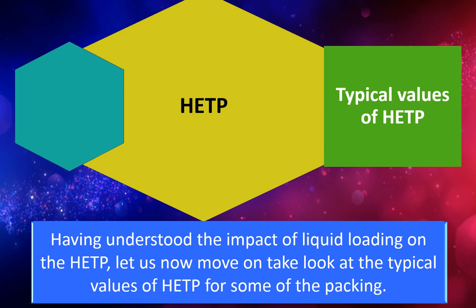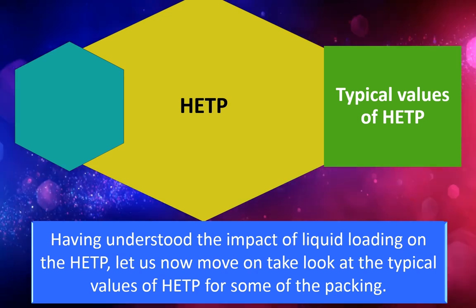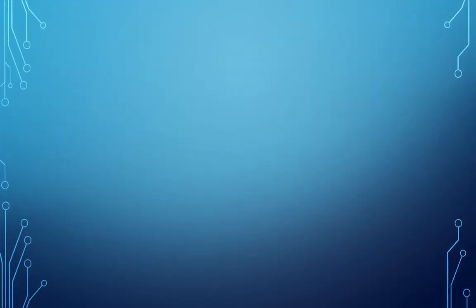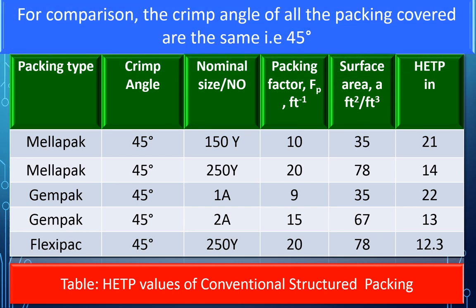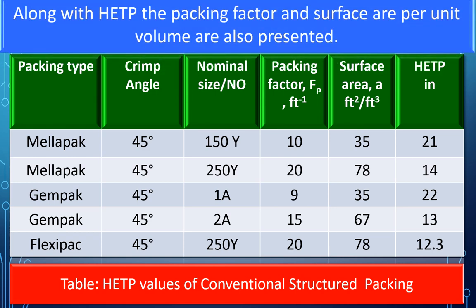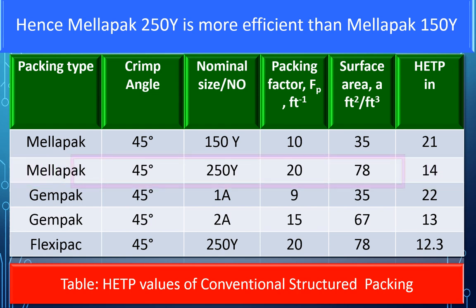Typical values of HETP: The table below presents HETP values of some commonly used structured packings, with the crimp angles of all packings being the same for comparison. Along with HETP, the packing factor and surface area per unit volume are also presented. For example, Mellapak 150Y has an HETP of 21 inches, whereas Mellapak 250Y has an HETP of 14 inches. Hence, Mellapak 250Y is more efficient than Mellapak 150Y.